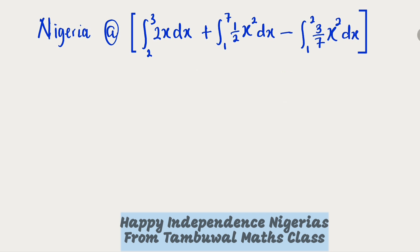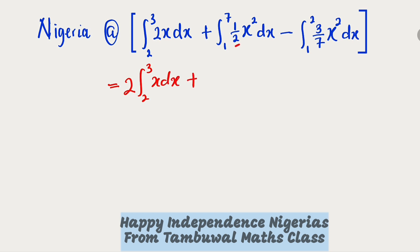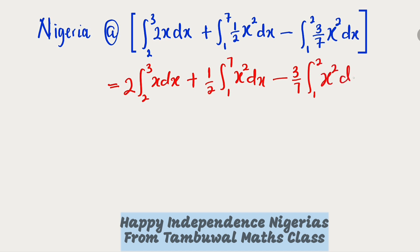So let's get started. We are going to simplify them independently. You can see we have three integrands, so let's begin. We are going to factor out all the constants. The first constant is 2 — we're going to bring it out, followed by the integral from 2 to 3 of x dx. Then plus, we're going to factor out 1 over 2 — the integral from 1 to 7 of x squared dx. And the last one we have 3 divided by 7 outside, integral from 1 to 2 of x squared dx.